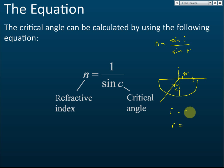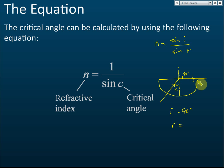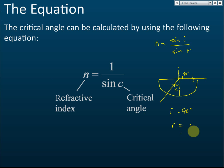The answer is i equals 90 degrees. Why? Because i must always be the angle in air or in vacuum, no matter what direction the light ray travels. So even if this is the incident ray, we still take this as i. Therefore i equals 90 degrees and r equals c.